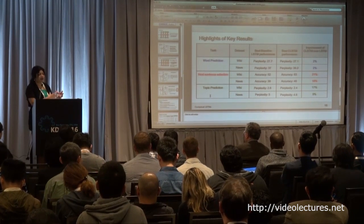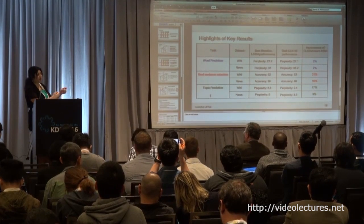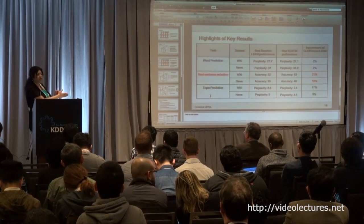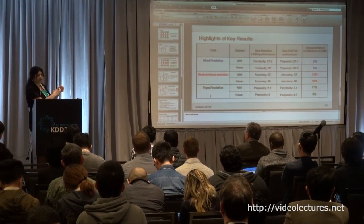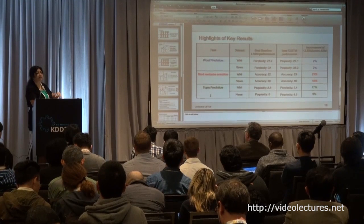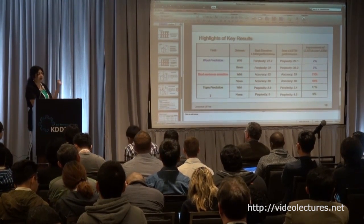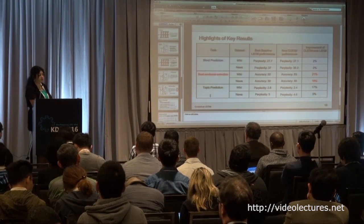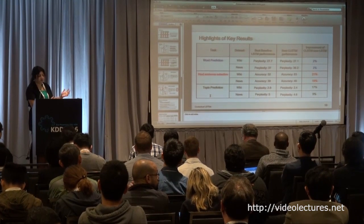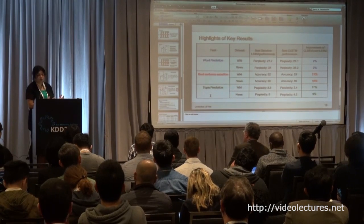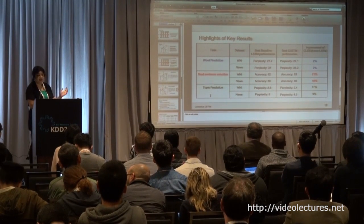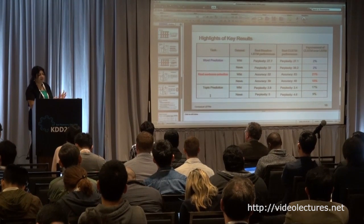Word prediction is measured in terms of perplexity, whereas next sentence prediction is measured as accuracy. We got about 21% gain on the Wikipedia dataset and about 18% gain on the news dataset for next sentence selection. We ran this on multiple runs to make the results statistically significant.